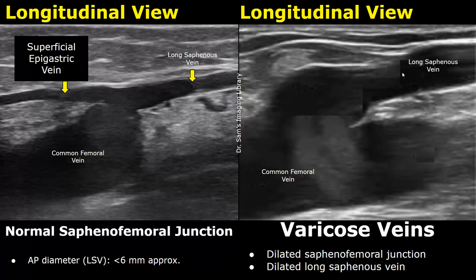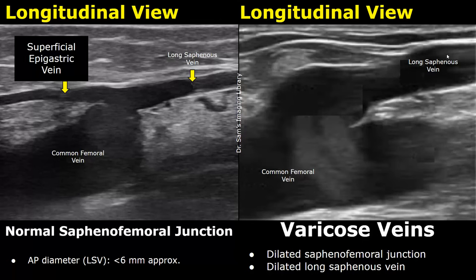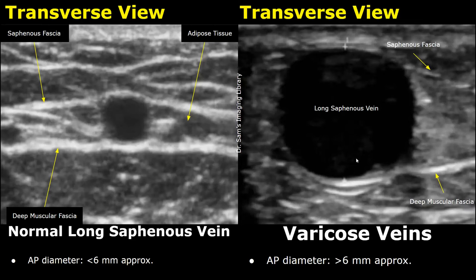Over here is a case of varicose veins. Varicose veins usually occur due to incompetence of the long saphenous vein or short saphenous vein, but the causes are variable. In such cases we may find a dilated saphenofemoral junction and a dilated long saphenous vein. Here is a transverse view showing a dilated long saphenous vein associated with varicose veins — we can see a dilated lumen.